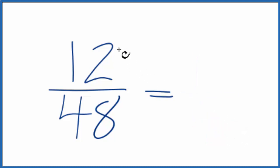We could divide the top and the bottom by 2, since they are even numbers. 12 divided by 2 is 6, and if you divide 48 by 2, you get 24. That might be a little bit easier to work with.